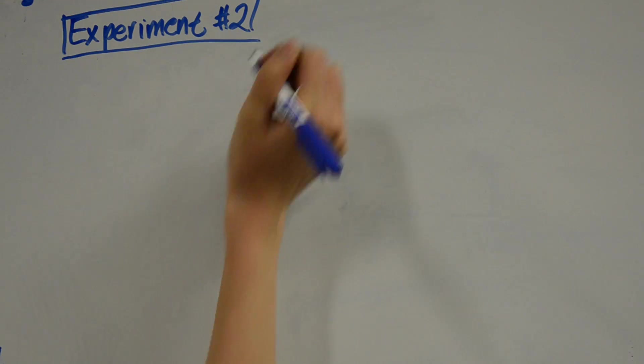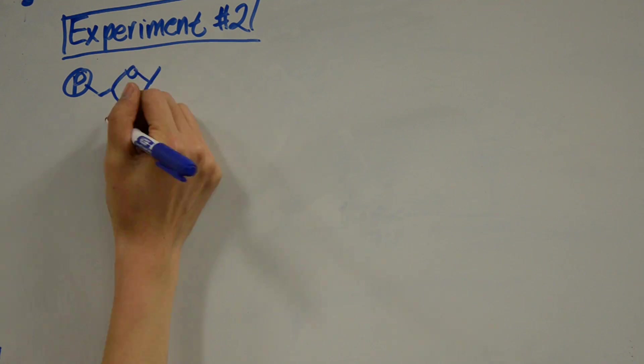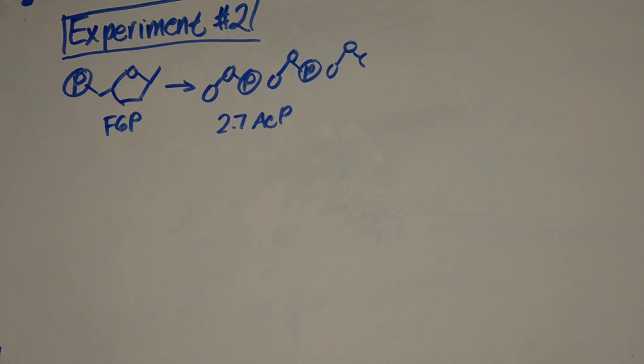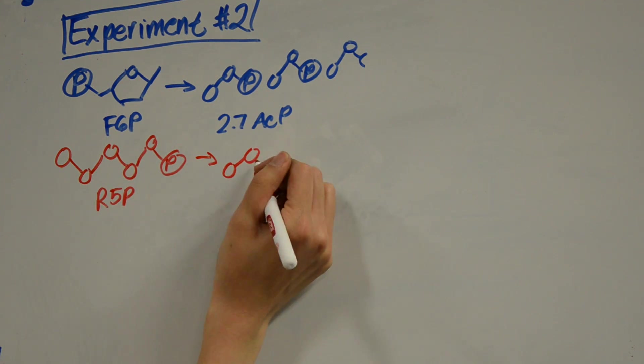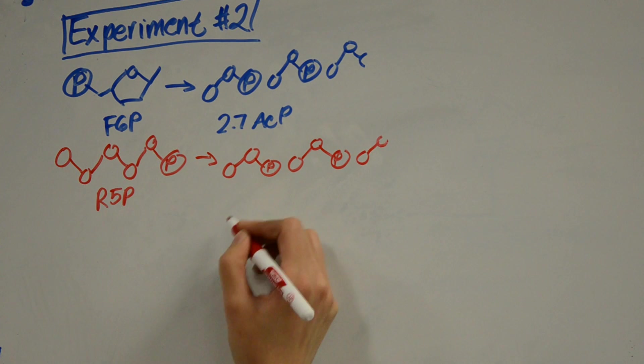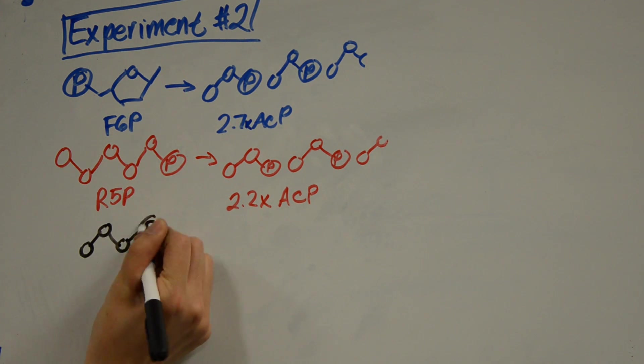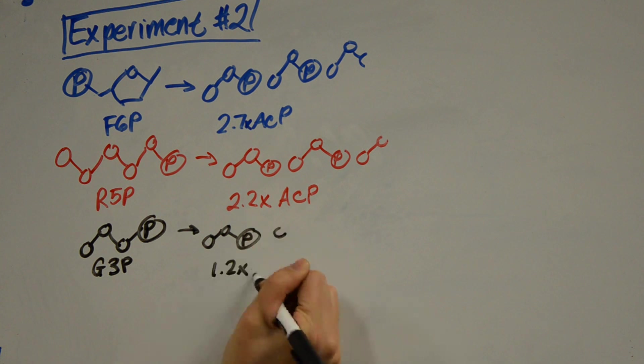The NOG pathway converts any carbohydrate into ACP two-carbon molecules without the loss of carbon as CO2. Therefore, to test the stoichiometry of this reaction, they performed an experiment where they converted a known amount of F6P into ACP, and they found that on average, one F6P molecule produced 2.7 ACP molecules, which is awfully close to three. They also found that one R5P molecule with five carbons, another intermediate of the carbon rearrangement step, produced on average 2.2 ACP molecules, which is really close to five divided by two, which is 2.5. And finally, they found that one G3P molecule with three carbons produced around 1.2 ACP molecules, which is close to the theoretical yield of 1.5.